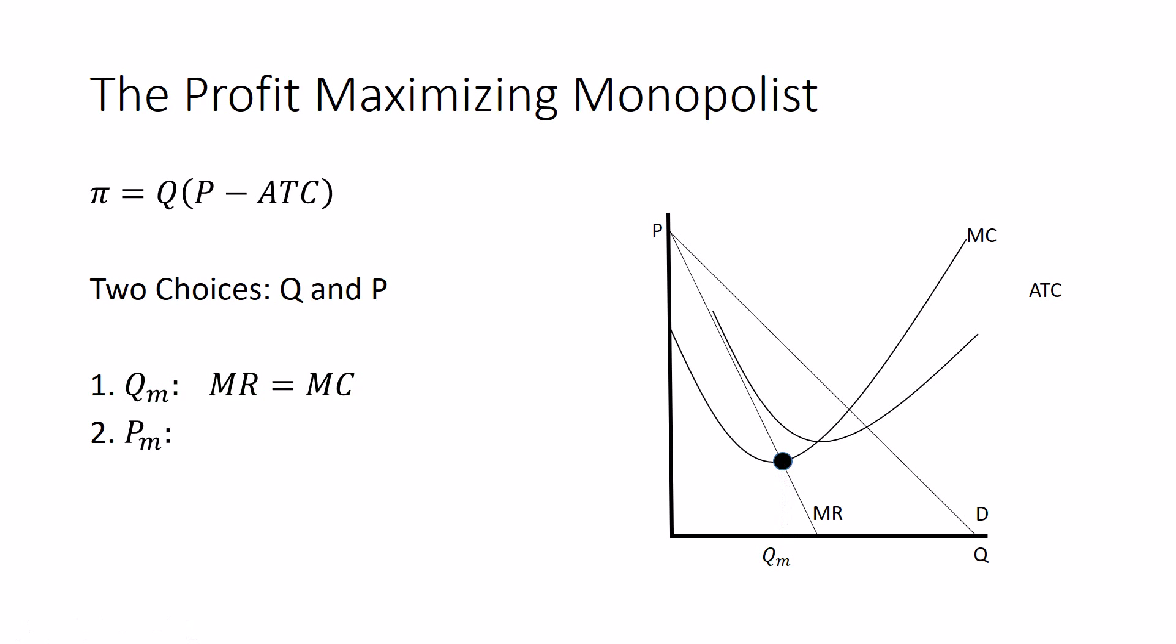That's the demand curve. So we're going to take the monopoly quantity and we're going to plug it into the demand curve like so. I took the quantity and traced it all the way up to the demand curve. And then I find the price associated with that point.